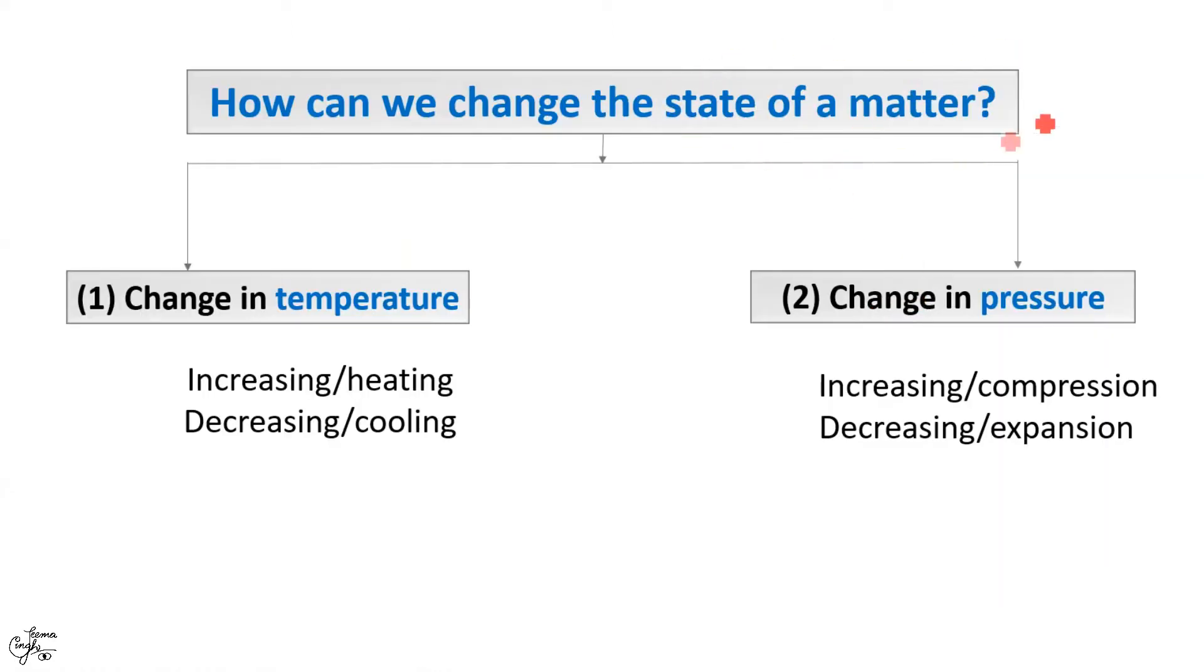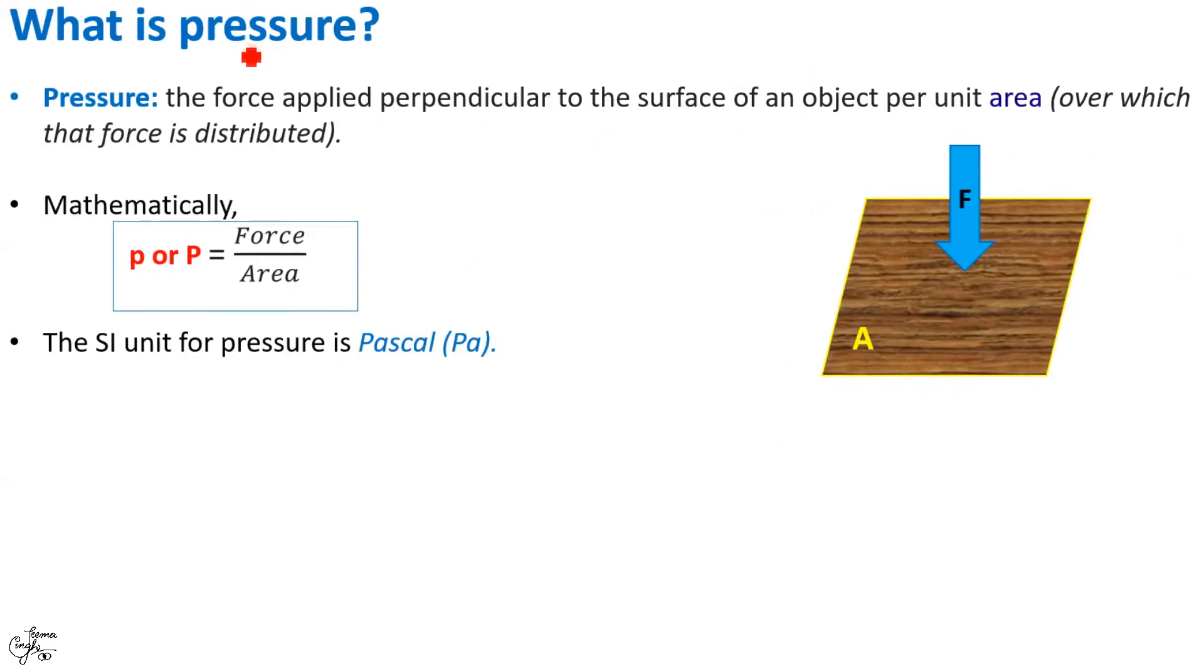The state of a matter can be changed in two ways. One, by increasing or decreasing the temperature which we have already covered in my previous video. And the other way which we are going to learn in this video is by changing the pressure, compression and expansion caused by increasing and decreasing the pressure respectively. Before we move ahead and learn how pressure changes the state of a matter, let us briefly recall what is pressure, its definition and units.